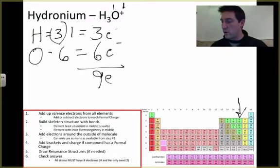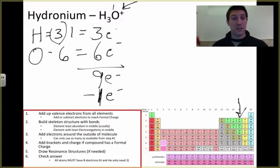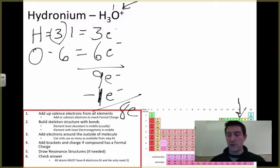And this has an overall formal charge of a plus, which means one of the electrons, one of the negative particles, must have gone away. So I need to get rid of one of the negative particles because the whole thing has an overall positive charge. That means I have eight electrons to build my hydronium with.